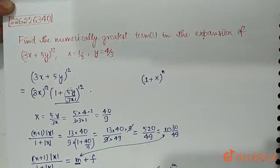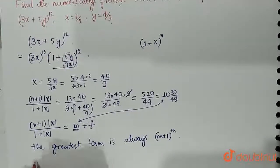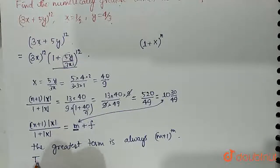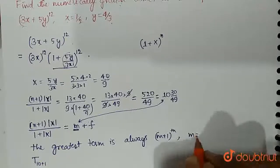So here the value of m is 10 so the greatest term would be 11th, that is (m plus 1) term. So we have to find T(10 plus 1) because m is 10.